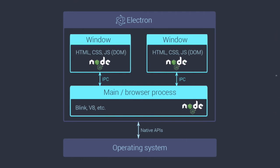Sometimes you'll have to communicate back and forth over that boundary. For example, if you have a button that when clicked should close the app, you would catch that click in JavaScript, send a message to the main side using inter-process communication, and then close the window. Electron has a built-in module called IPC for this — you can emit any arbitrary events and catch them on the other side, just like an event emitter if you're used to Node.